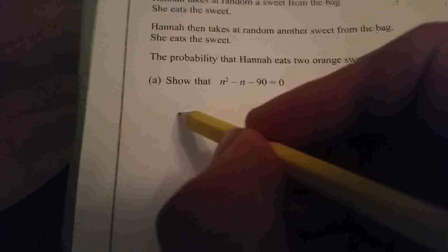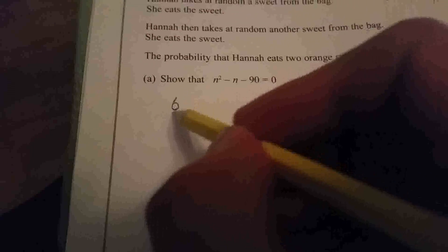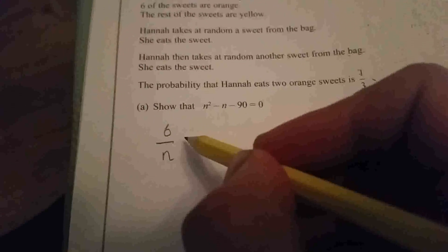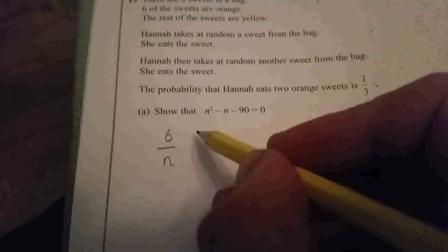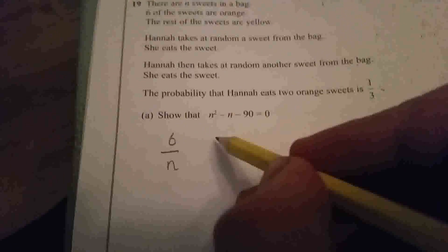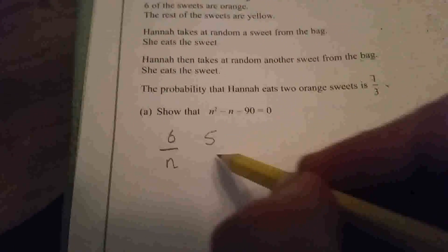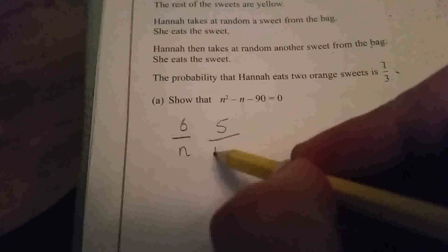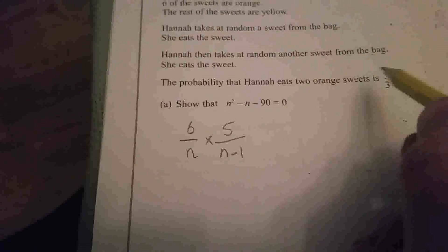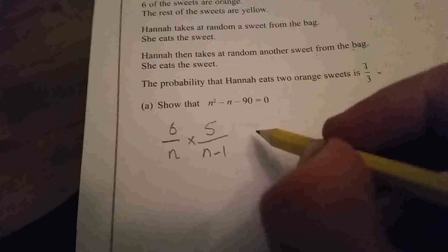We can start by seeing the six orange sweets. So that's 6/n. Now the second time, there's not going to be six sweets, there's five sweets and there's one less total. So it's 5/(n-1). You multiply those and it says the probability of this is 1/3.